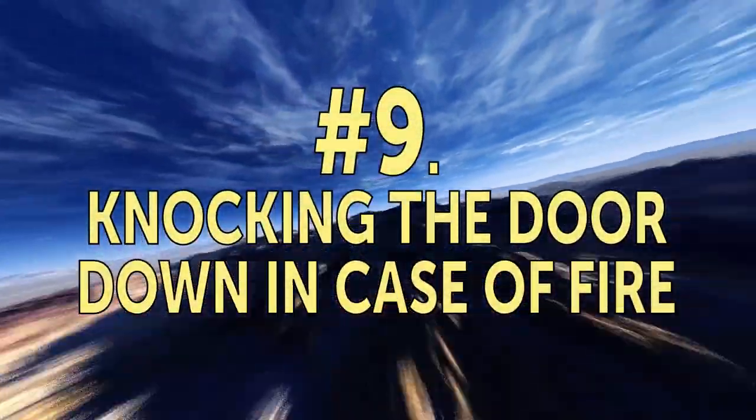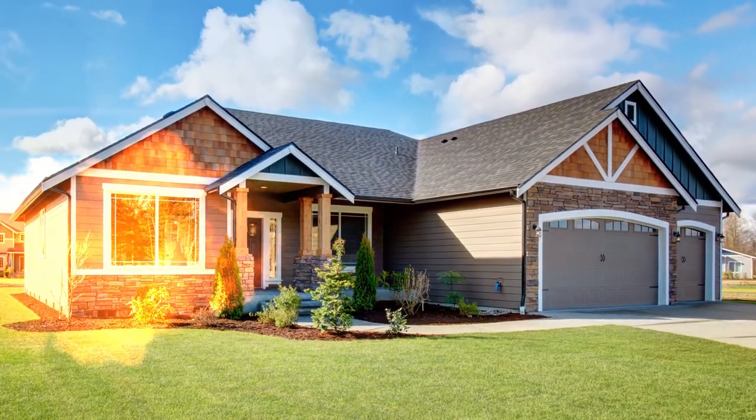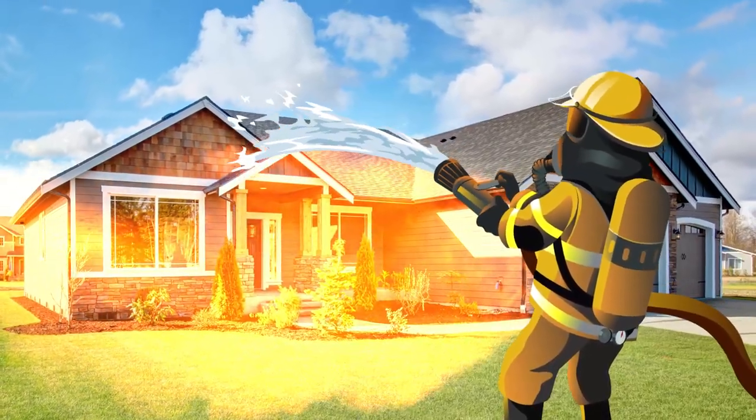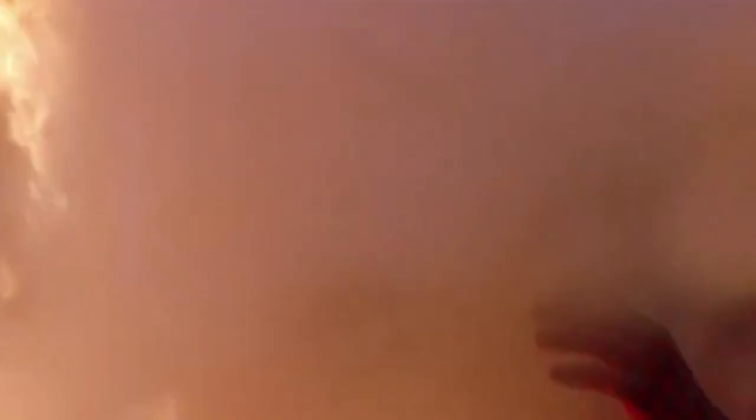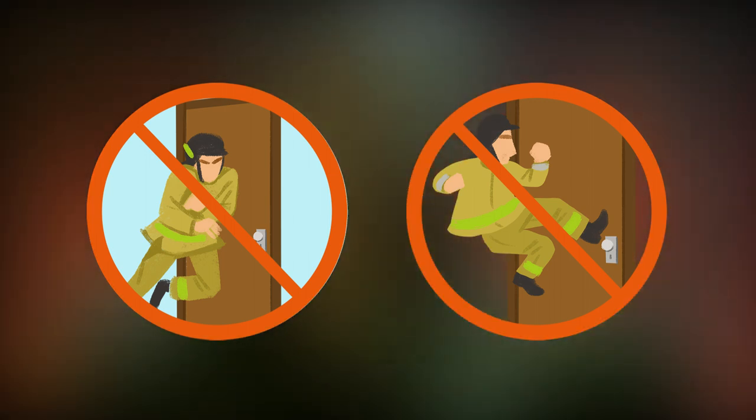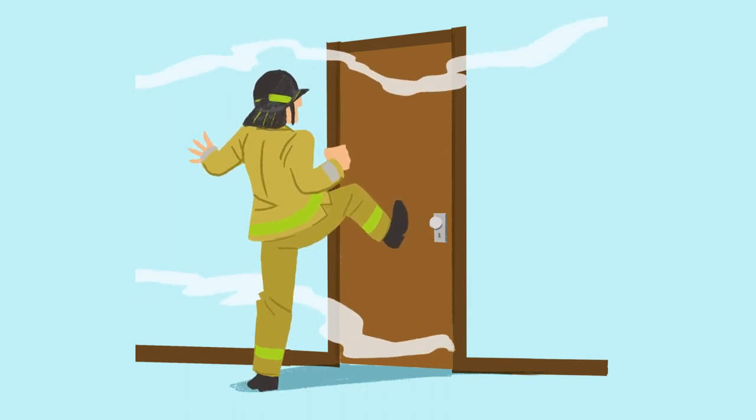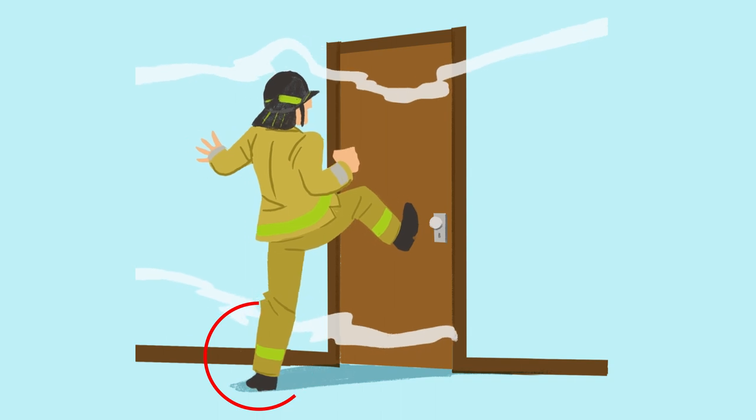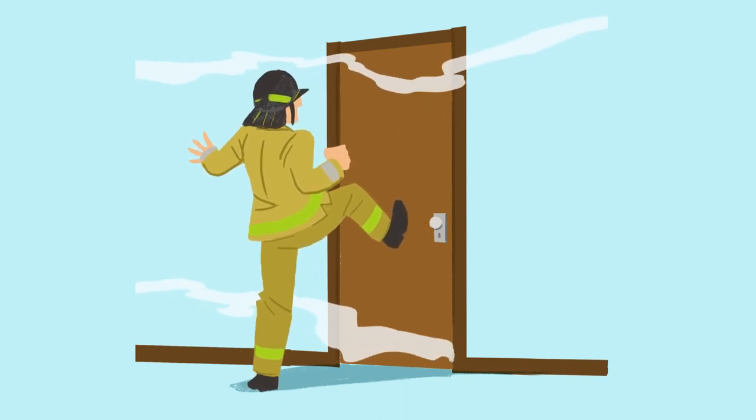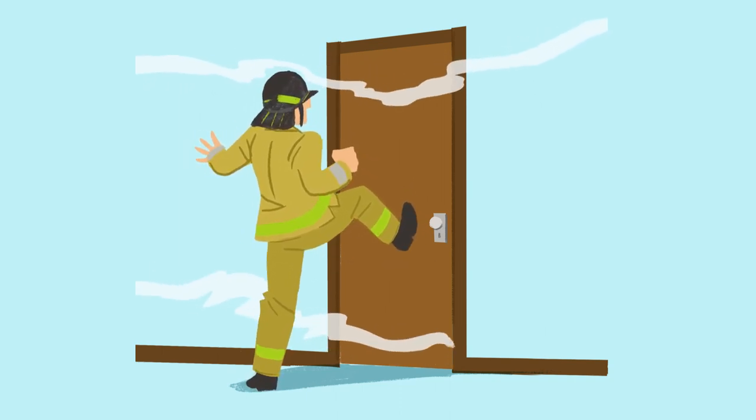Number 9: knocking the door down in case of fire. If you ever find yourself in a burning building, there's a chance that you'll need to knock the door down to escape or help others. And the way you see it done in the movies couldn't be more wrong. Running towards it and throwing your whole body against it can leave you with a dislocated shoulder or even broken bones. In reality, it's so much easier. Just kick the door's lock with your heel and try to use all your weight to do it. Your other heel should be planted firmly on the floor. A precise and powerful enough kick will knock out any lock and thus will open any door, even if it usually opens from the other side.